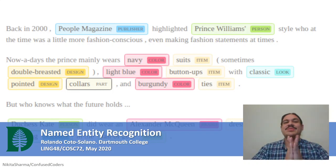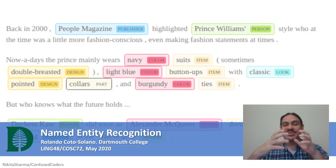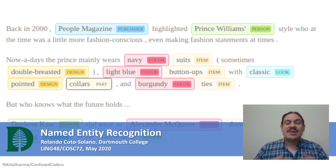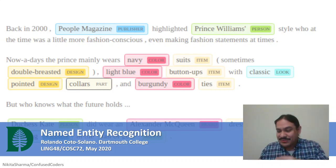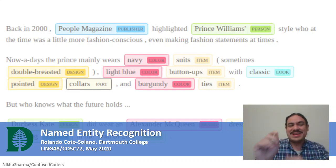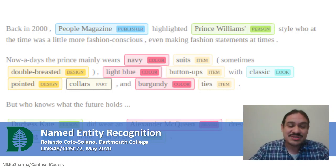In the last few videos, we've been looking at knowledge bases and how to organize knowledge so that we can perform inferences on it. But here we're going to get to the nitty-gritty of how we can extract information from our data. We're going to look at a technique called named entity recognition.